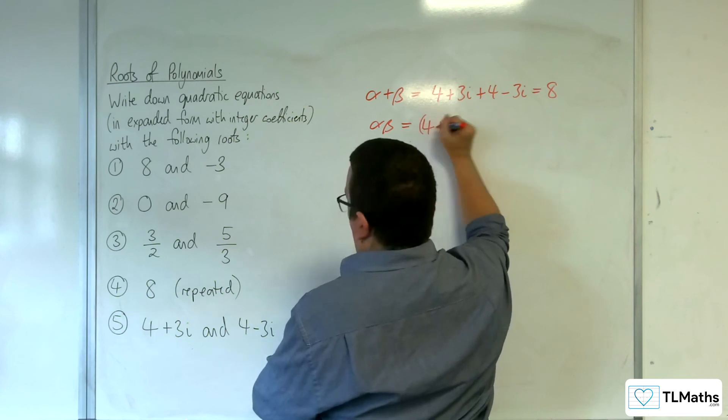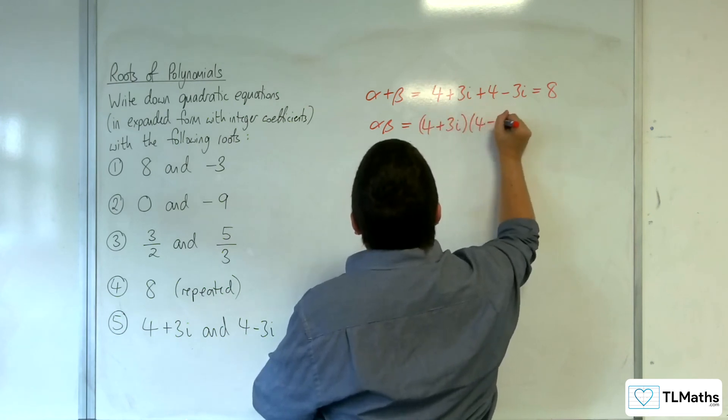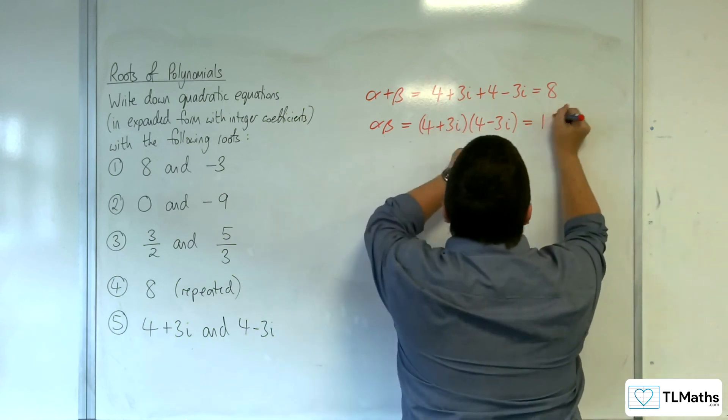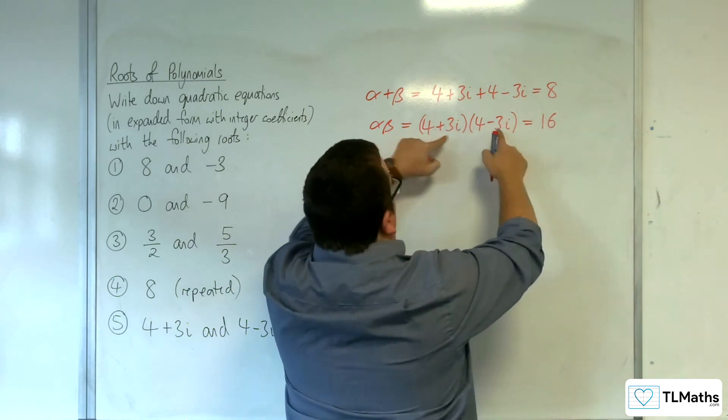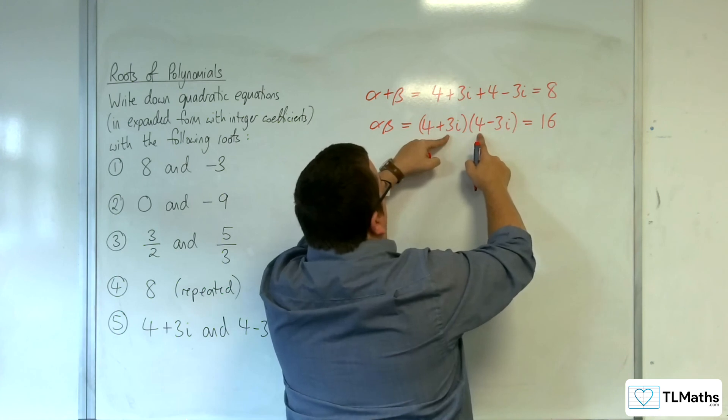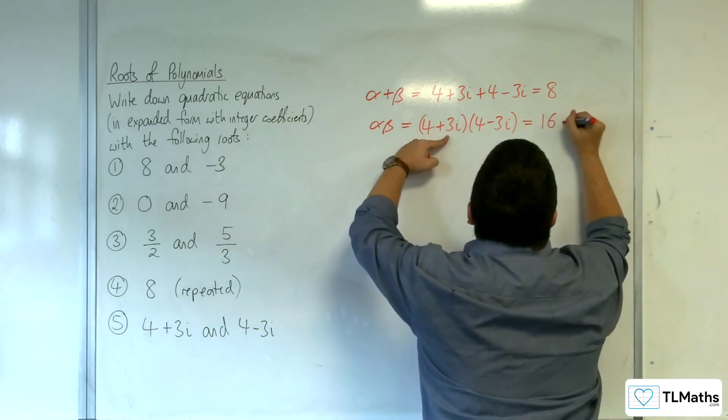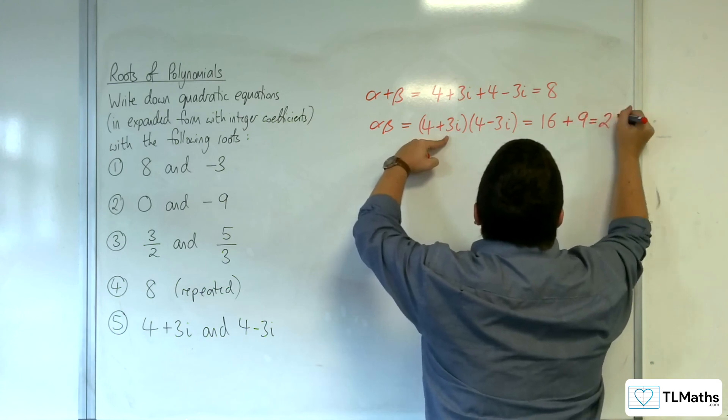so 4 plus 3i times 4 minus 3i. You get 4 times 4, which is 16. You're going to get minus 12i and plus 12i, which cancel one another out. Then 3i times minus 3i is going to be plus 9. And so you get 25.